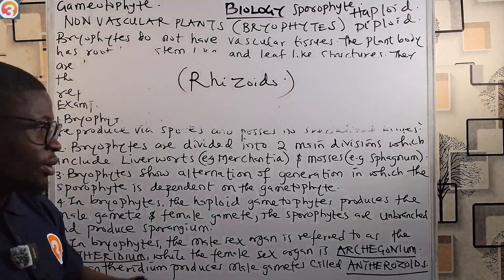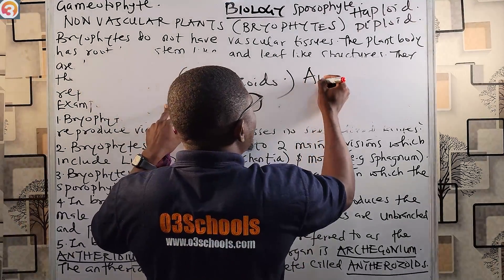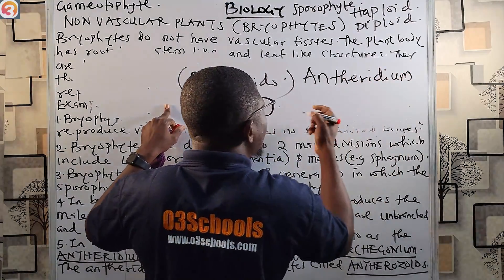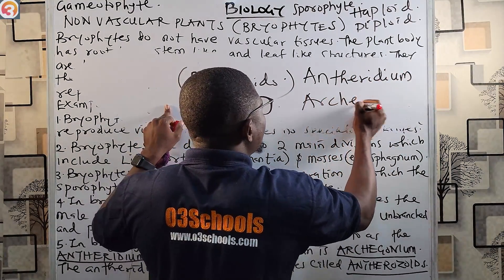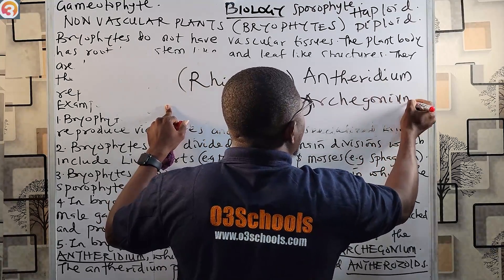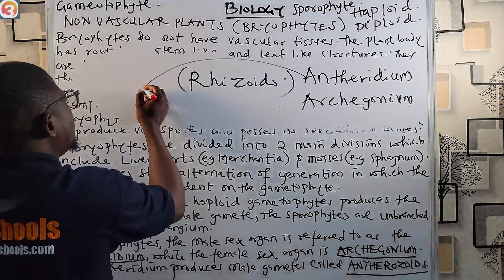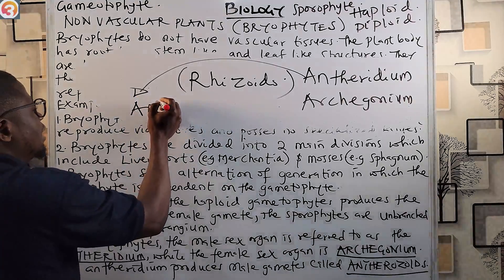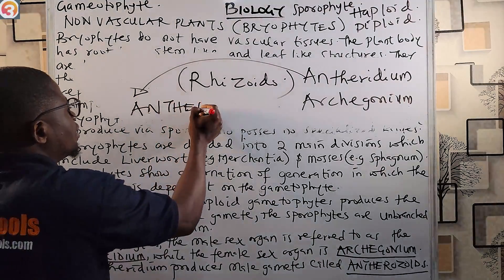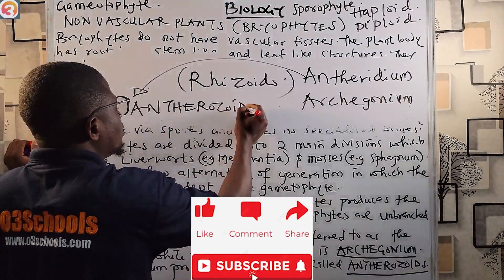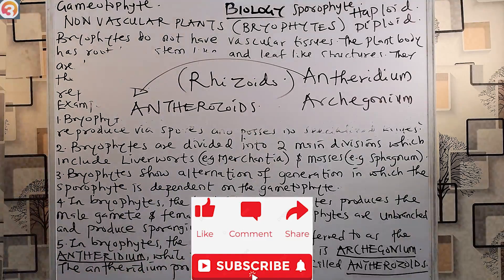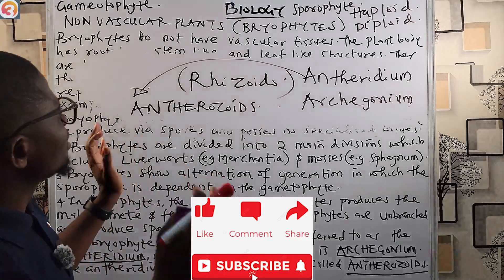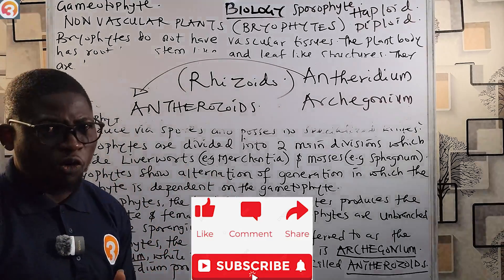In bryophytes, the male sex organ is the antheridium, the female sex organ is called the archegonium, and the antheridium produces what we call the anterozoites. Please take note of all these terms — they are very, very important. This is what we need to know about the bryophytes.